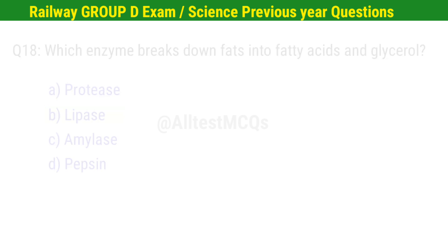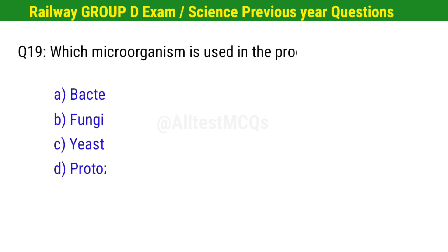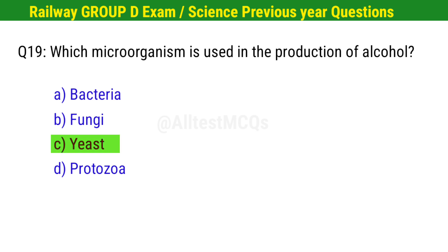Question No. 19. Which microorganism is used in the production of alcohol? Right option is C. Yeast.